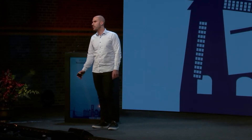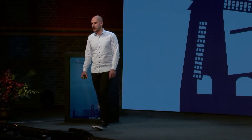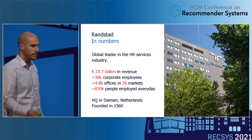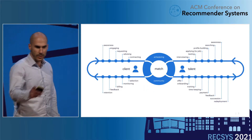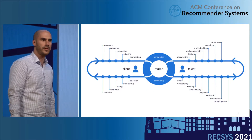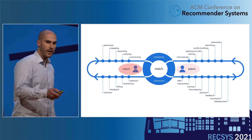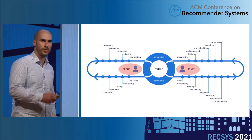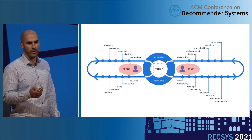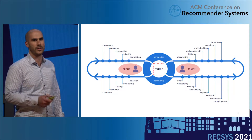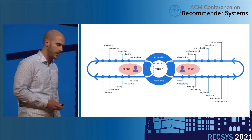So who are we? Randstad is an HR leader. We operate in 38 different markets, and we are situated in the top three in most of them. We supply many different services to both clients — companies that are looking for people — and for talents, which are people looking for jobs. At the core of what we do is try to match between those two parties.